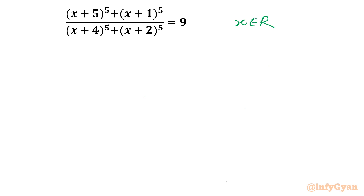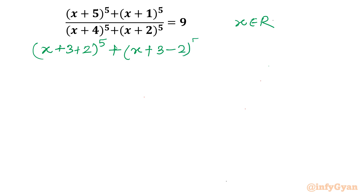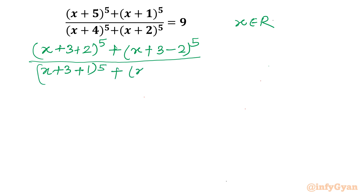Let us consider our numerator. We can see x+5 as (x+3+2)^5, and the second term x+1 as (x+3-2)^5. In the denominator, it is (x+3+1)^5 plus (x+3-1)^5, equal to 9.